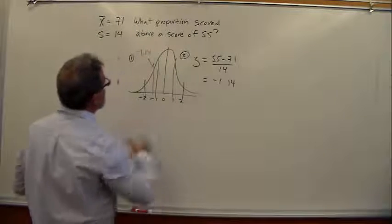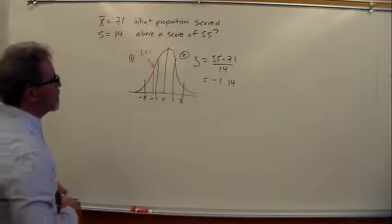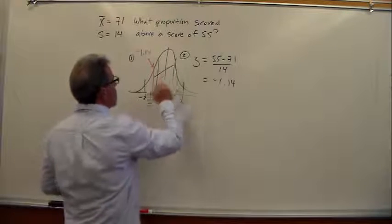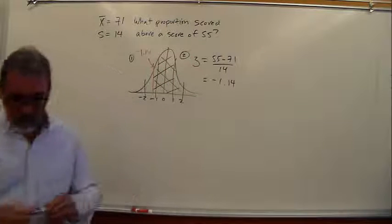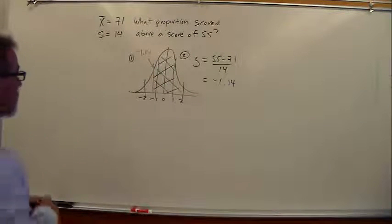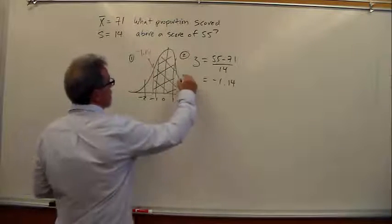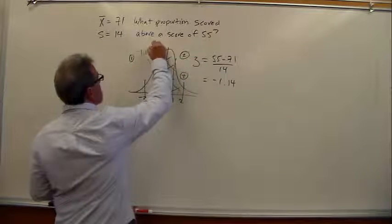Step 4 is shade. What proportion scored above a score of 55? Alright, so we're doing this. That's our shaded area.